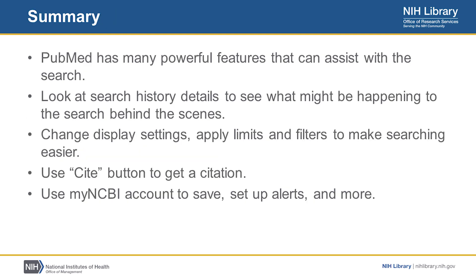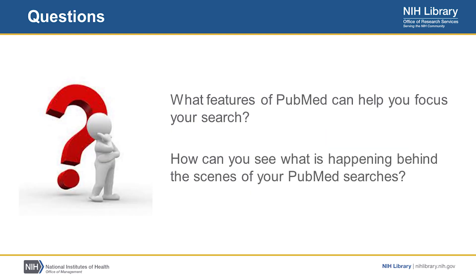In summary, PubMed has a lot of powerful features that can assist you with your search. If you look at your search history details, you can see what might be happening to your search behind the scenes beyond what you initially planned. You can change your display settings and apply limits and filters to make your search easier. The Cite button is a handy way to handle citation formatting. Have your tools work for you. You can use a My NCBI account to save your searches, set up alerts, and do more. Questions to consider: what features of PubMed can help you focus your search, and how can you see what is happening behind the scenes of your PubMed searches? Thank you for listening.